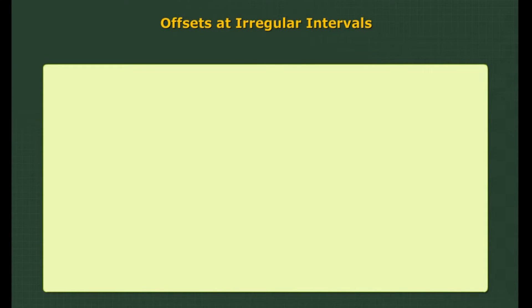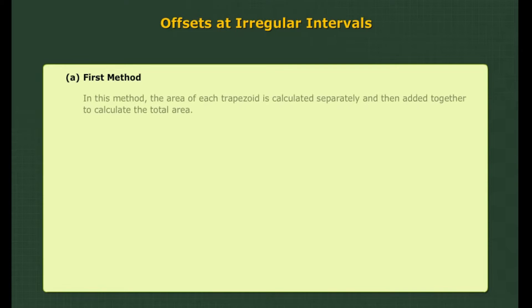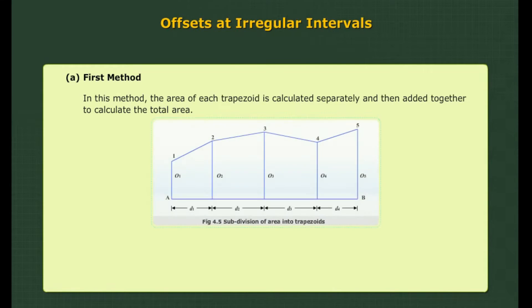Computation of areas by irregular boundaries — Method 1: In this method, the area of each trapezoid is calculated separately and then added together to calculate the total area, as shown in the figure.